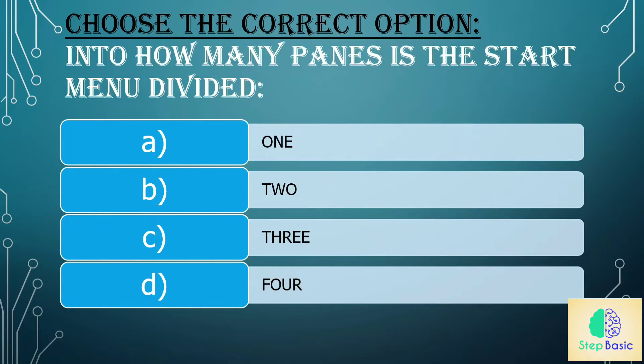Question 4: Into how many panes is the start menu divided? Options are: a) 1, b) 2, c) 3, or d) 4. The answer is b) 2.